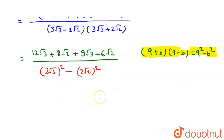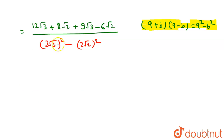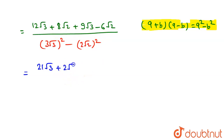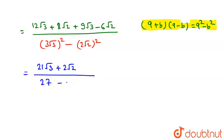Now combining terms: 12√3 + 9√3 = 21√3, and 8√2 − 6√2 = 2√2. So the numerator is 21√3 + 2√2. The denominator is (3√3)² − (2√2)² = 27 − 8 = 19.